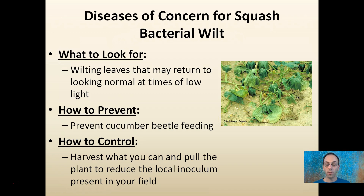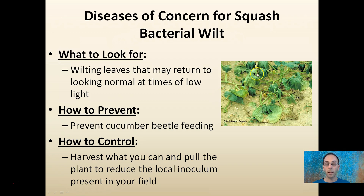Bacterial wilt is the wilting of the leaves, as the name implies. The leaves may return to normal in times of low light, such as right around sunrise or just before the sun completely sets. You want to prevent cucumber beetle feeding, because that is the main vector for this disease. The control is to harvest what you can and then pull that plant out so that other cucumber beetles don't feed on the infected plant, pick up more of the bacteria, and spread it to your other plantings.